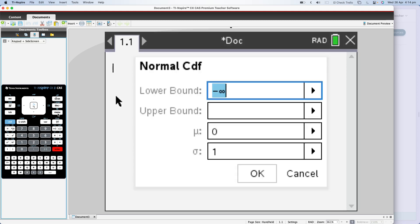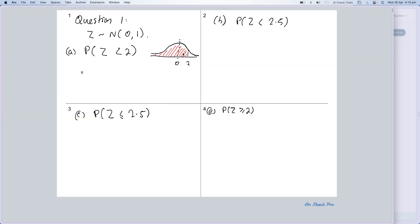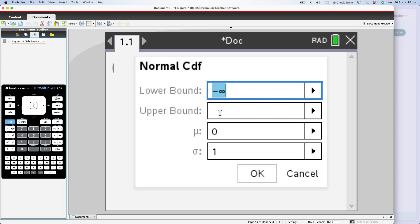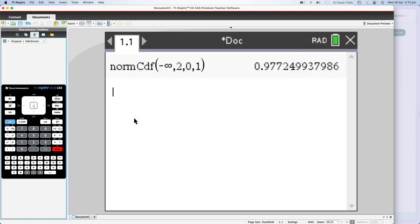By default it's given us the options for a standard normal distribution: a mean of zero and a standard deviation of one. It's also given us a lower bound of negative infinity. Almost always we want to write our distributions as going from a particular point backwards, so we leave it as negative infinity and then put in our upper bound which is two. I'm pressing the tab key, typing in two, leaving my mean as zero and standard deviation as one. Then I'm tabbing over and pressing okay, and it gives us a value of 0.977.